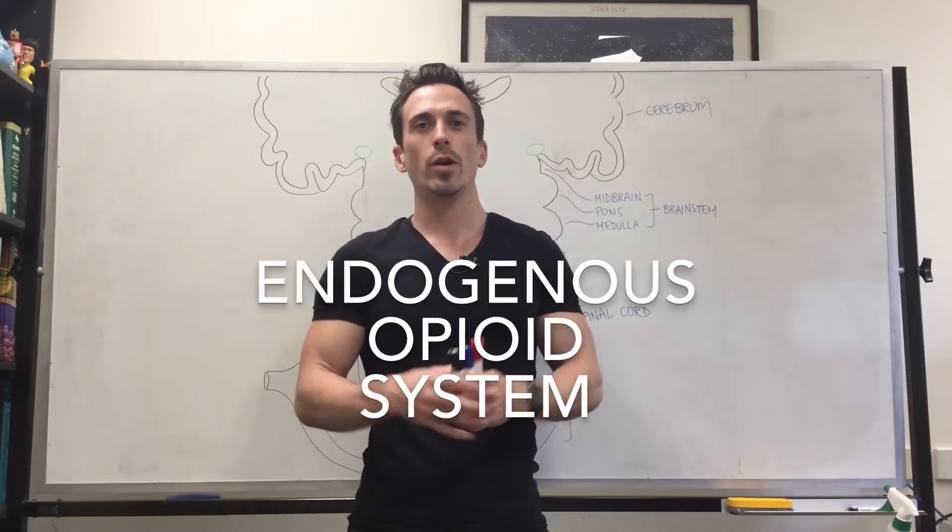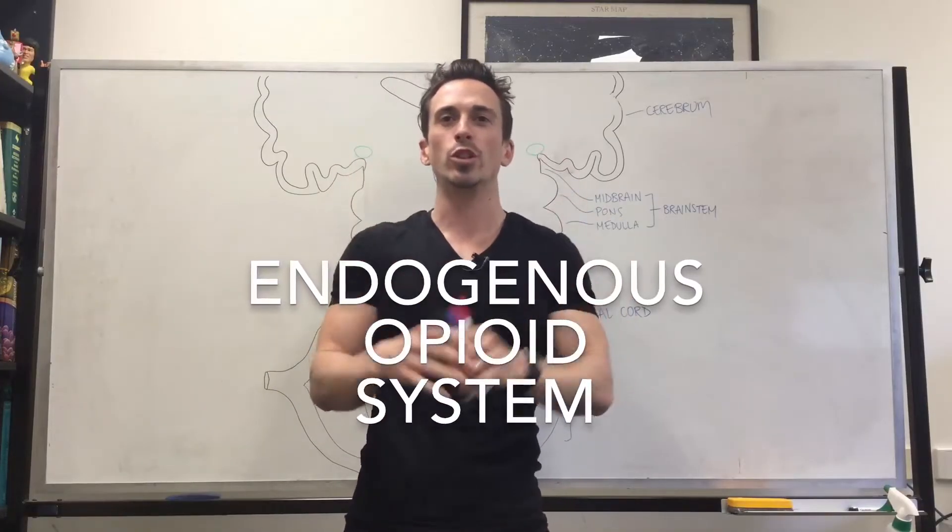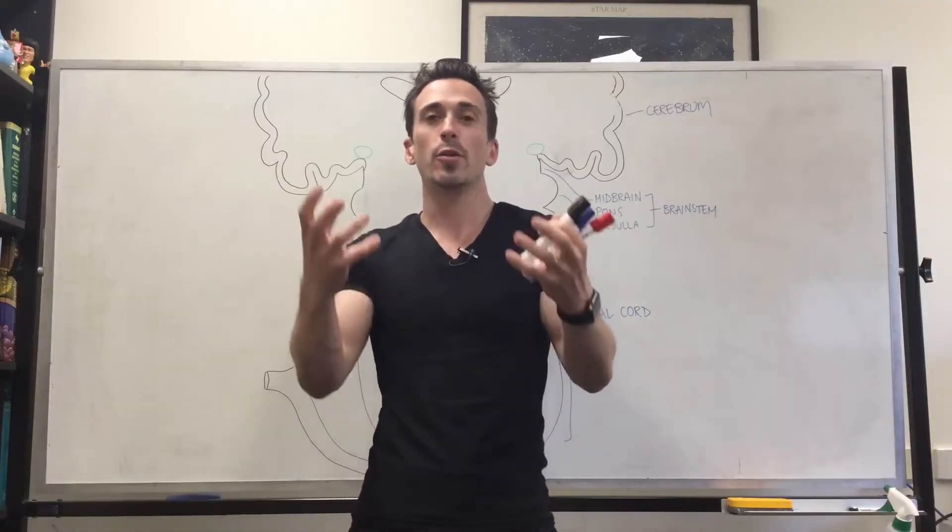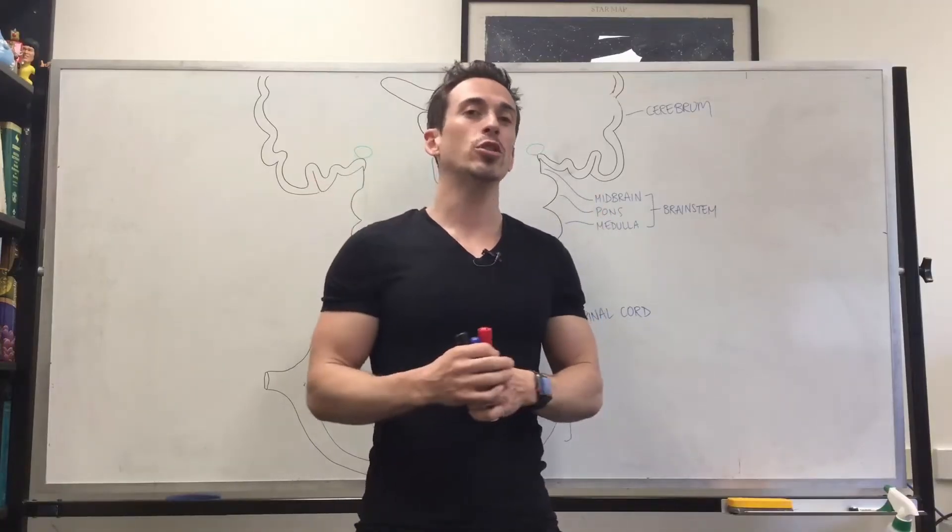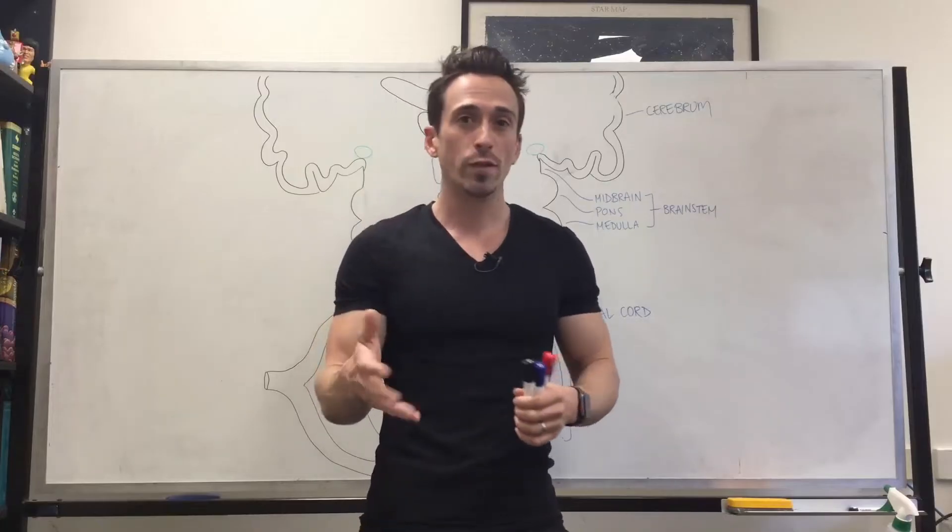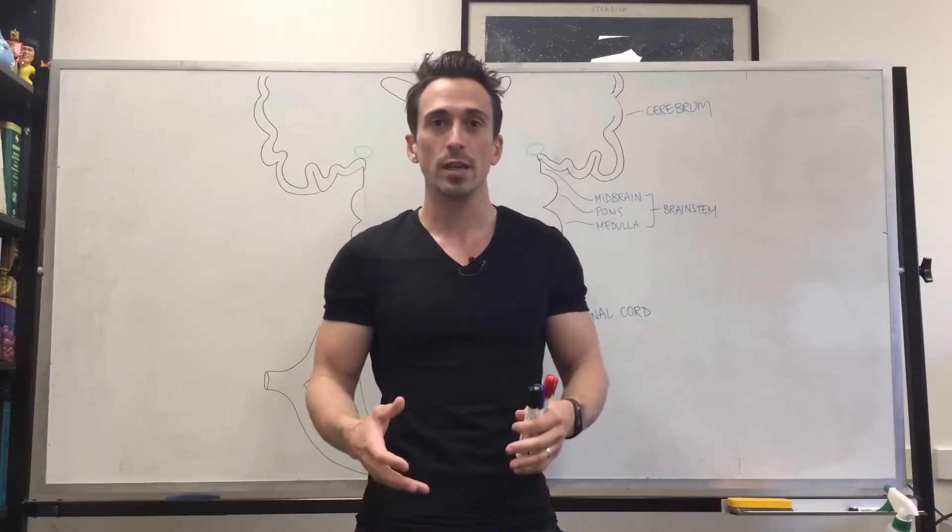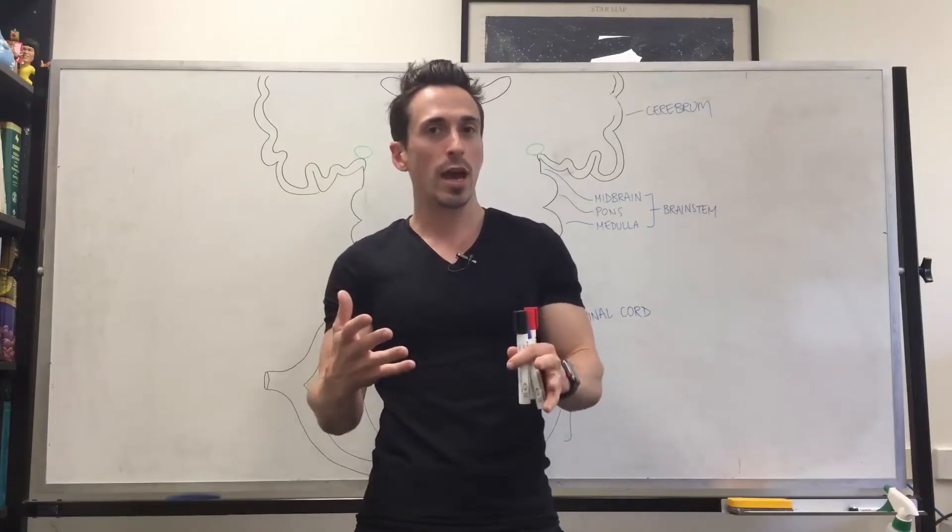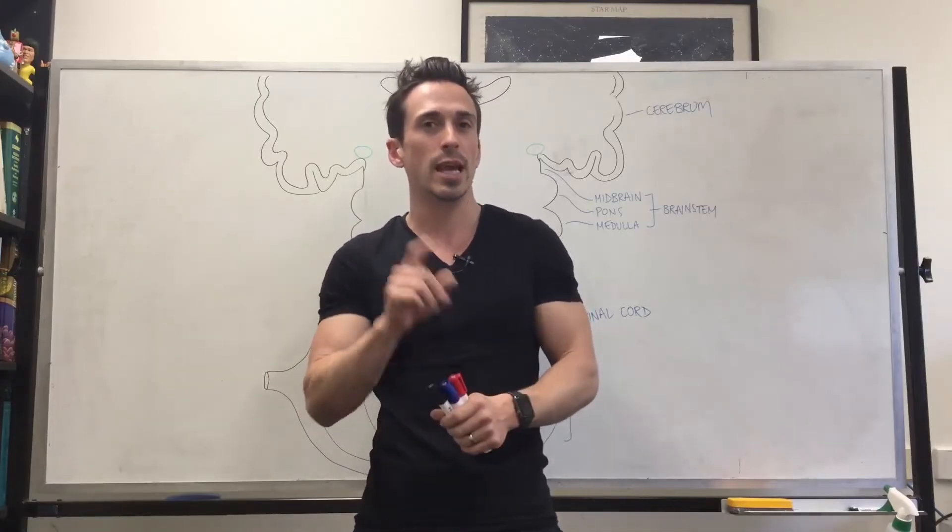Hi everybody, Dr. Mike here. In this video, we're going to talk about the body's own analgesic system. This is the body's own pain relief system in which we experience pain. Our body releases certain types of chemicals called endorphins, enkephalins, and dynorphins to help reduce or mitigate that pain. I'm going to try and succinctly tell you exactly how this process occurs.